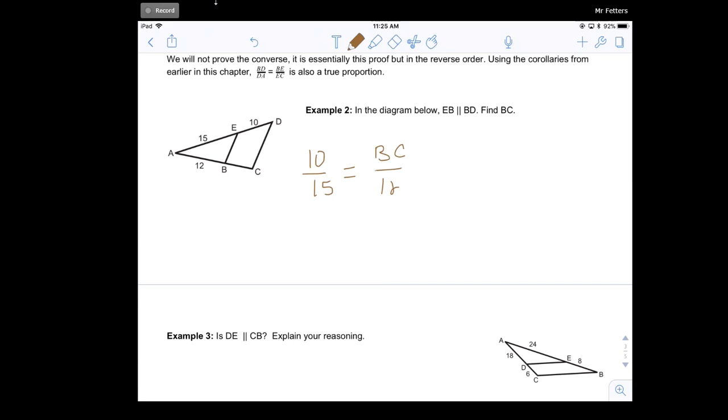Now, to make it a little bit easier to be able to do in your head, the 10 over 15, I can actually reduce that, divide both by 5. 10 divided by 5 is 2, 15 divided by 5 is 3, and I get 2 thirds. So BC over 12.